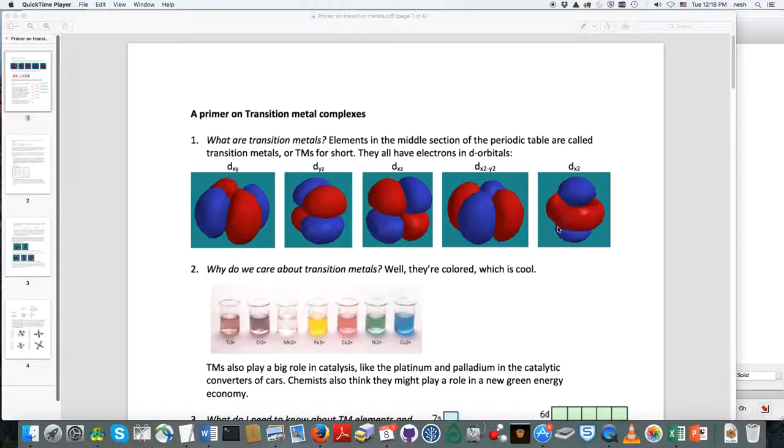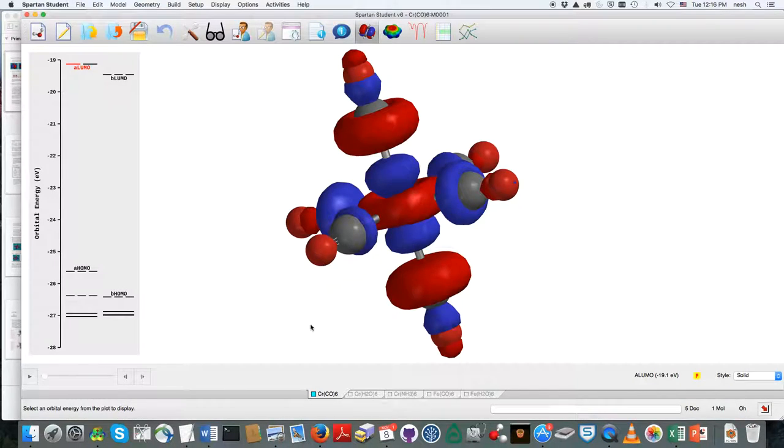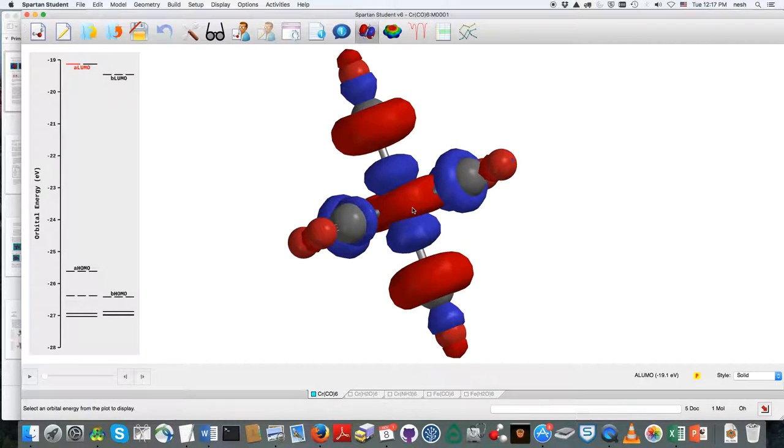And when it gets put into a complex, then you can still recognize those shapes. So for example, I have here the chromium-carbon monoxide complex, and you can see that same d-orbital in there.